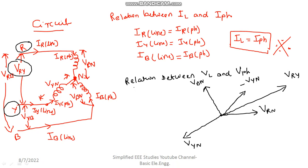Vry is your line voltage. Vry means line voltage. Minus Vyn and Vrn is the phase voltage. Now construct the parallelogram — you can construct the parallelogram. So this is your parallelogram.